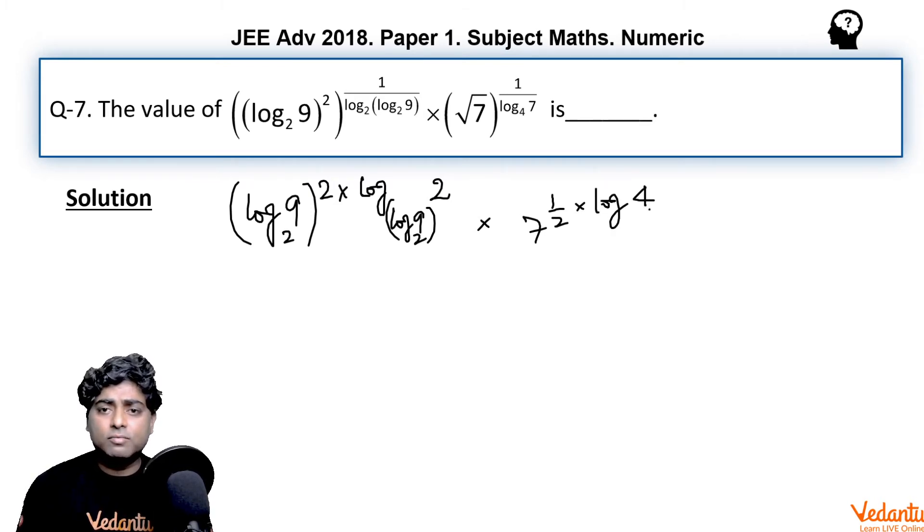In the first term, if I take log₂9 as some number 'a', I can write it as a^(log_a 2). And log_a 2 times log₂4 equals log_a 4, so we have a^(log_a 4) because log₂9 appears here again.